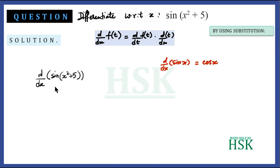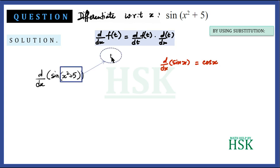To differentiate sin(x² + 5) with respect to x using the substitution method, we assume that x² + 5 equals t. So now we have to differentiate d/dx of sin(t).